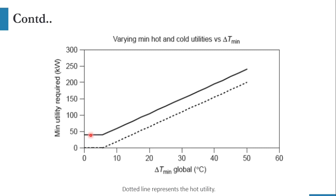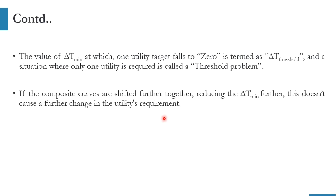If you take a delta T minimum in the range of 0 to around 7 or 8, delta T minimum has no effect on the utility requirement — it will remain the same. But once you move beyond that threshold point, the requirements vary with the manipulation of delta T minimum. So this is what we call a threshold system, and this is its overall representation.